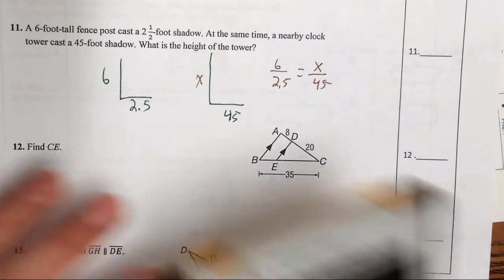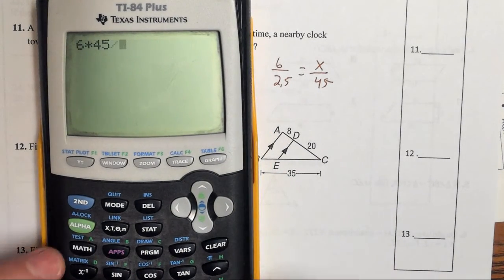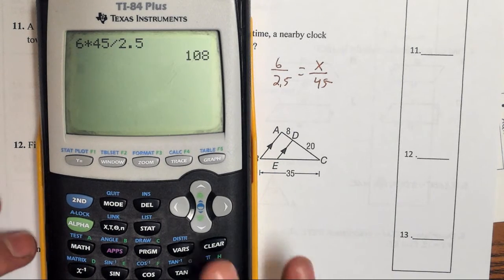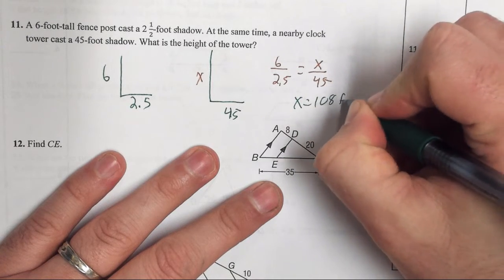And then we cross multiply and solve. So six times 45 divided by 2.5 means that clock tower is 108 feet tall. So X equals 108 feet.